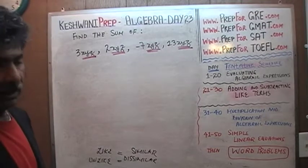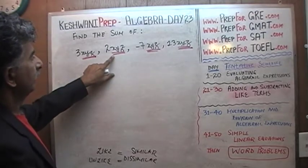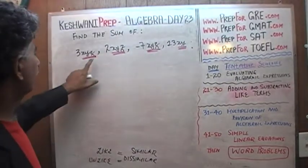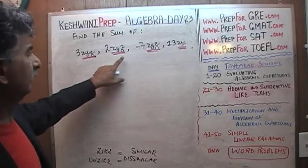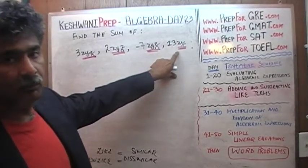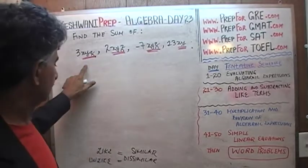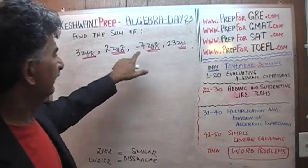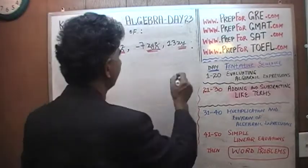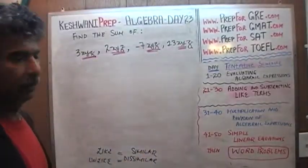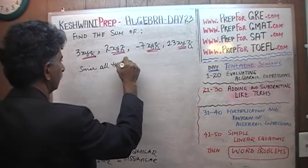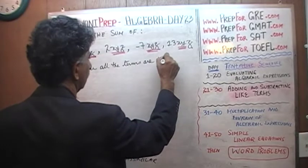Now on the other hand, if we had 3xy plus 2xy minus 7xy plus 13xy — with no z in it — then this is no longer a like term. These three are the same, and this term is unlike those three, in which case we would add those three coefficients and this would stay by itself. But since it does have a z, all we have to do is add up all the coefficients, since all the terms are like terms.